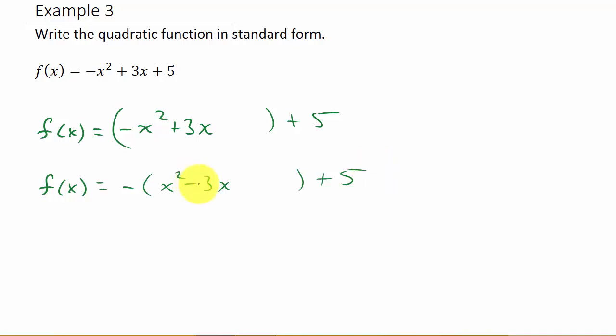Now what we do is take the number in front of x and we half it. So we half the 3, so half of 3 gives me 3/2, and then I square it. 3 squared is 9, 2 squared is 4, and so I add the 9/4.